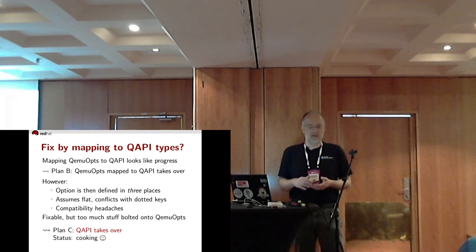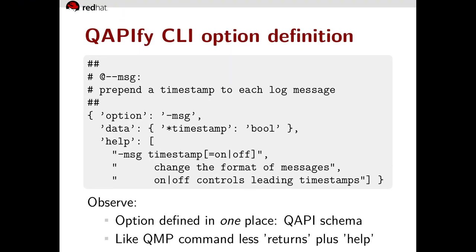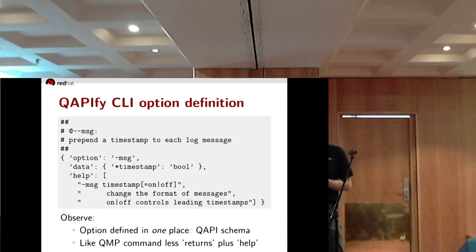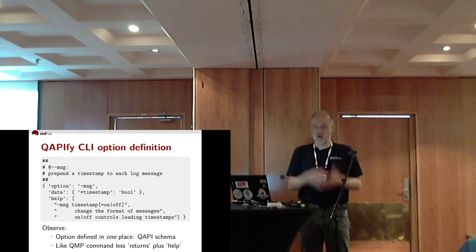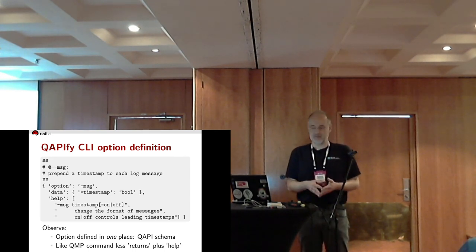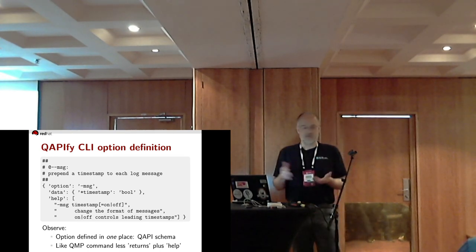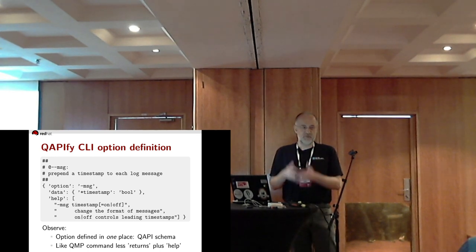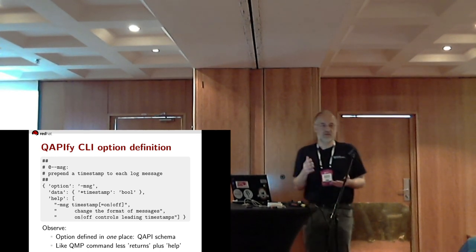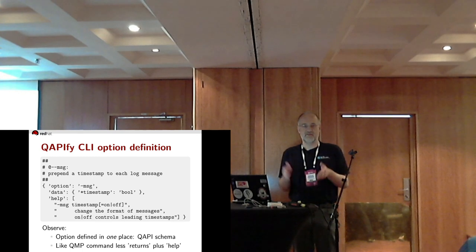So that's my plan: QAPI takes over. Let's see what I've got cooking. This is how I propose to define a command line option in the future — in one place, in the QAPI schema. If you're familiar with the QAPI schema, this will look exactly like a QMP command definition to you, which sort of makes sense because an option is similar to a command except it can't return anything and it runs only at a specific point in time. There's an additional feature for the help text.